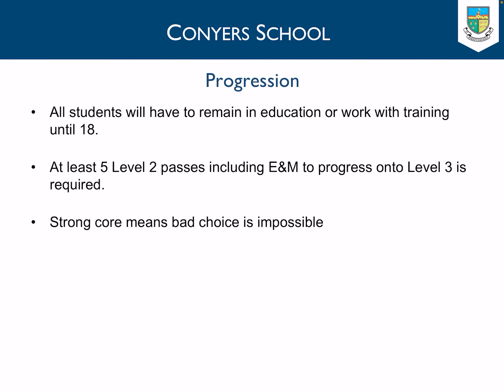In terms of progression and education post-16, all students have to remain in education or work with training until they are 18. They need at least five Level 2 passes — Level 2 BTECs, GCSEs, Nationals — including their English and Maths, to progress on to Level 3 courses such as A-levels. The strong core curriculum at Conyers means that a bad choice is impossible and students are given the opportunity to progress on to whatever they would like to choose.